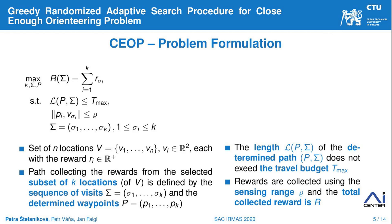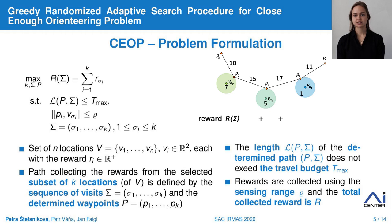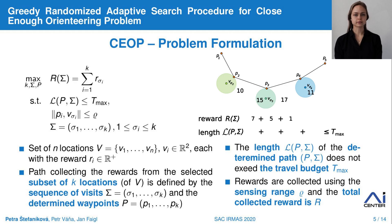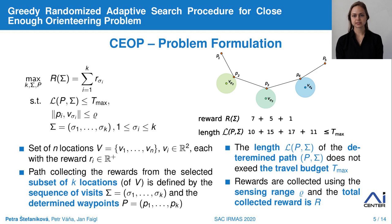In CEOP, we want to maximize the reward R that is collected from the selected subset, subject to several constraints. The first and major constraint is to fit the total path length into the travel budget T_max, which may represent the drone battery limit, for example. Secondly, the waypoint locations of the path in which the vehicle collects the data must be within the disk area determined by the specific location and the sensing radius.